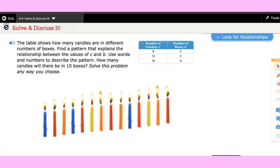Before we start, we would like to work on this question. The table shows how many candles are in different number of boxes. Find a pattern that explains the relationship between the values of c and b. Use words and numbers to describe the pattern.